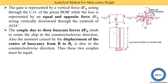Here, two types of couples are produced. First is due to the buoyant force, also called the wedge couple. Second is the moment caused by the displacement of the center of buoyancy from B to B1. This buoyancy point B moves to B1, creating some moment. This displacement of the center of buoyancy from B to B1 is also in the counterclockwise direction. Thus these two couples must be equal. We need to find out the two different equations: one for the couple due to buoyant force dF_B, and another for the buoyancy force moving from B to B1.